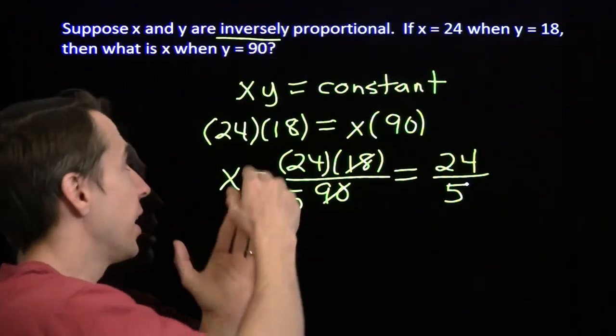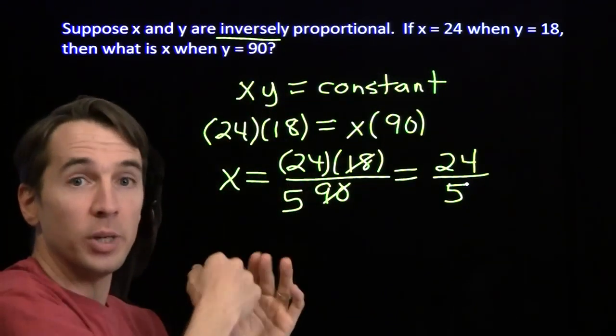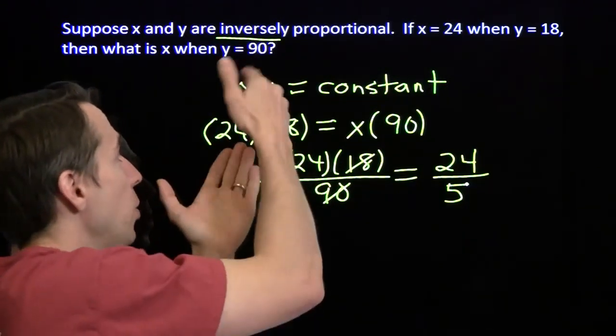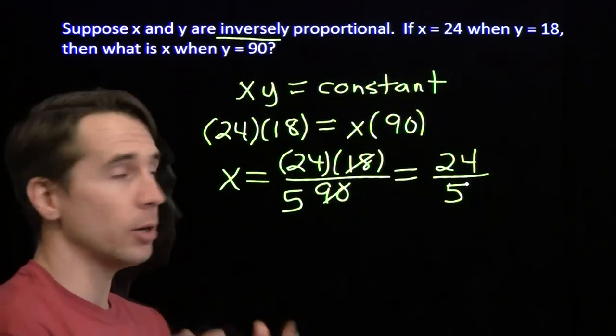You double y, you halve x. You triple y, you divide x by 3. Same thing if we go the other way. If you halve y, you have to double x and so on.